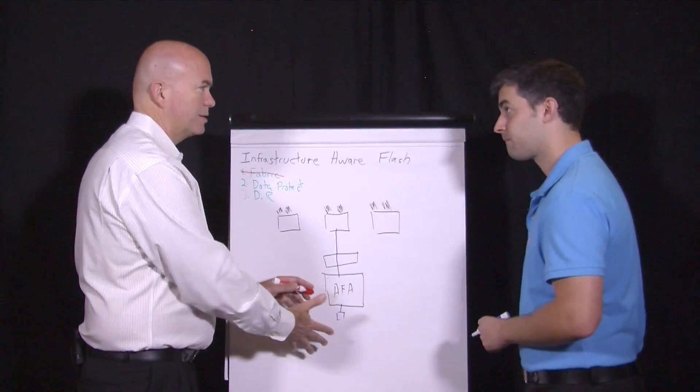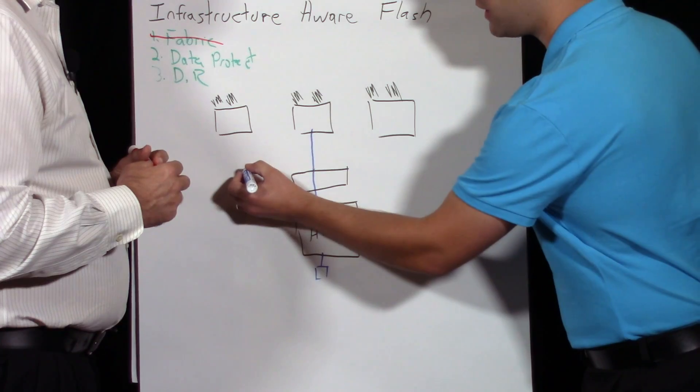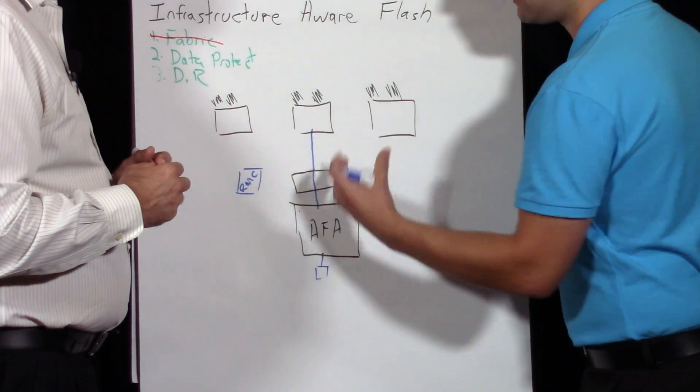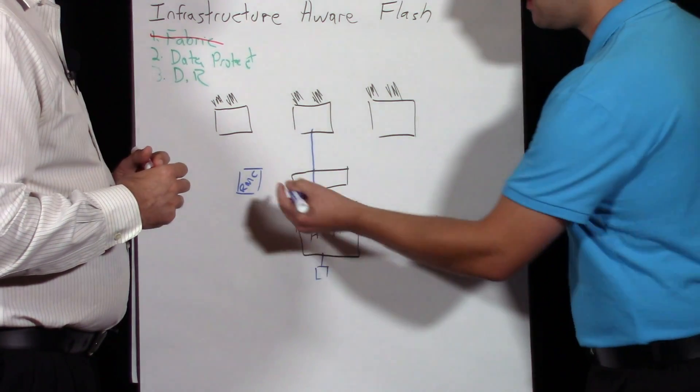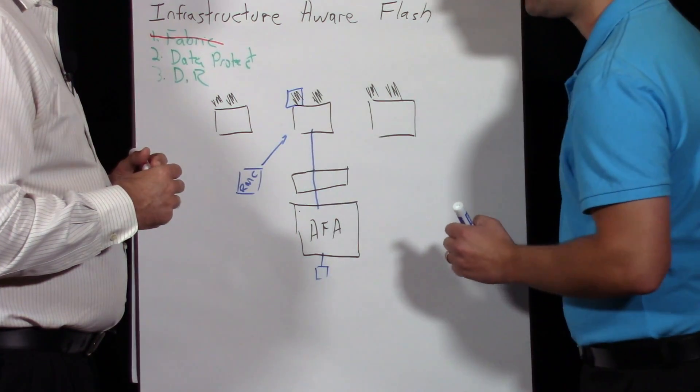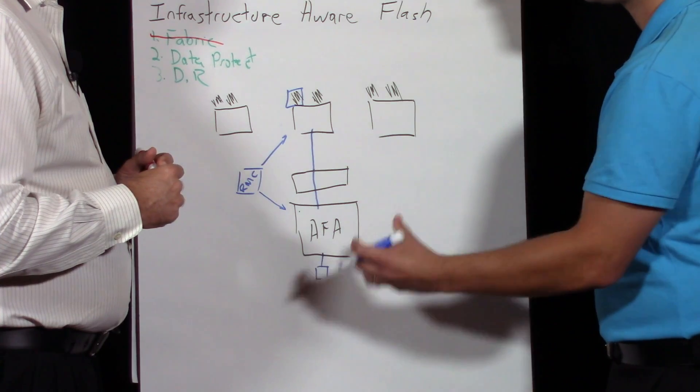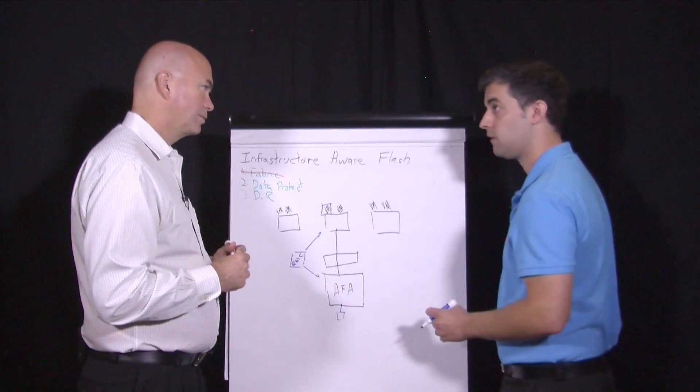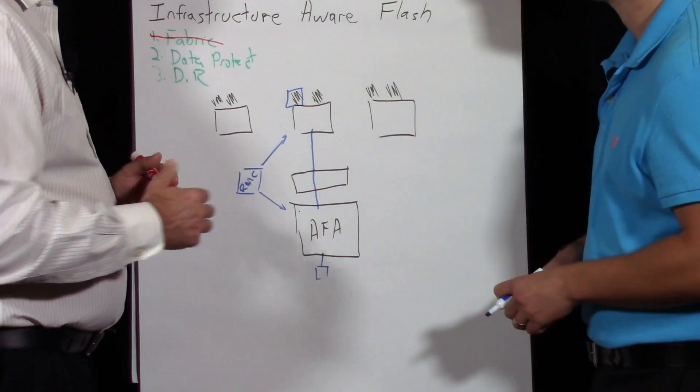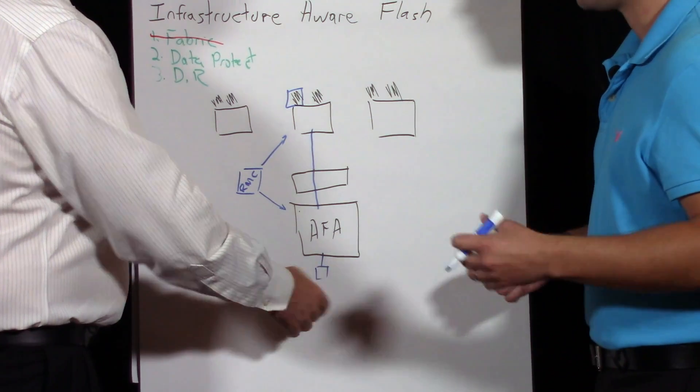Think of it as an orchestration engine. Recovery Manager Central allows us to take an application-consistent snapshot of the virtual machine, then orchestrate the array to take an application-consistent snapshot from the array point of view. We can then remove the VM snapshot, and now we're holding that consistent snapshot on the array. Your only impact is essentially one snapshot, and your historical snapshots can stay on the array.